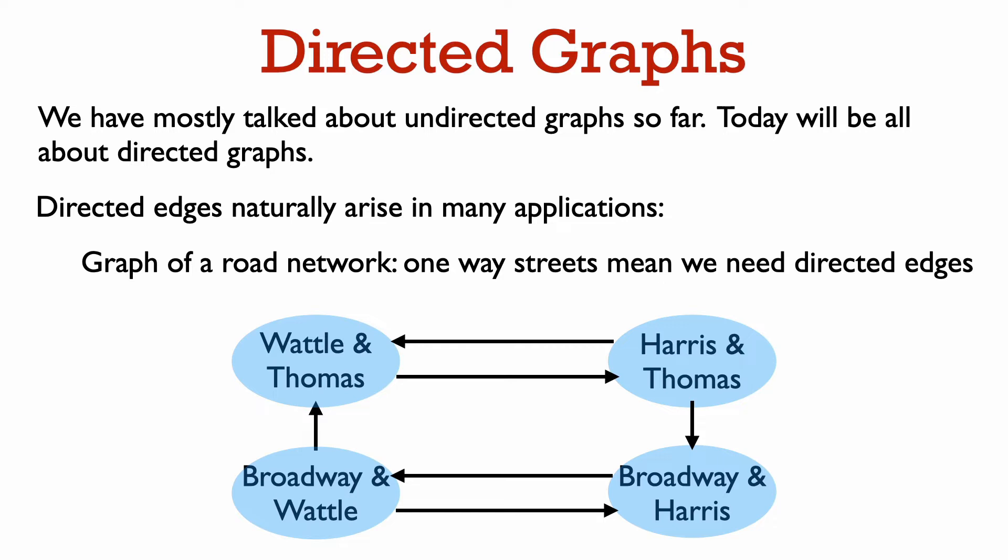Here's an example of some streets around UTS. You can drive from Broadway and Waddle to Waddle and Thomas, but not the other way around, because this is a one-way street. So we indicate this with a directed edge from Broadway and Waddle to Waddle and Thomas.